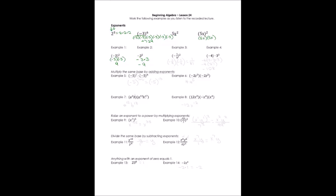Example 3 involves fractions: negative 1/9 times another negative 1/9. Two negatives give a positive answer. We multiply numerator times numerator and denominator times denominator, giving us 1 over 81. Example 4: we multiply negative 4 times 3 cubed, which is 3 times 3 times 3. Cubing 3 gives 27, and negative 4 times 27 gives us negative 108.